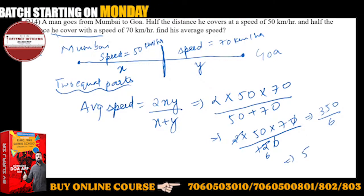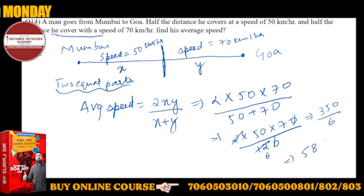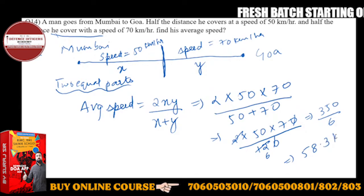That gives us 58.3333. Very good—58 point 3.